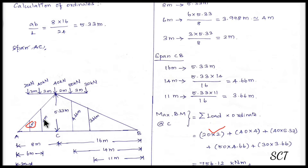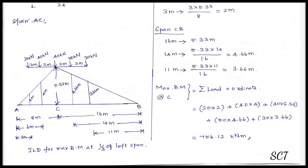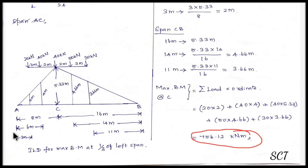Now we calculate the maximum bending moment at C: 40 × 4, plus 40 × 5.33, plus 50 × 4.66, plus 30 × 3.66, giving a total of 756.1 kNm. This is the maximum bending moment at point C.